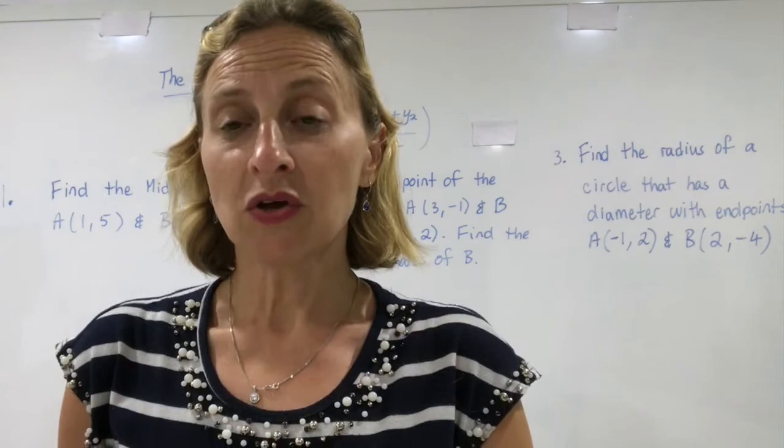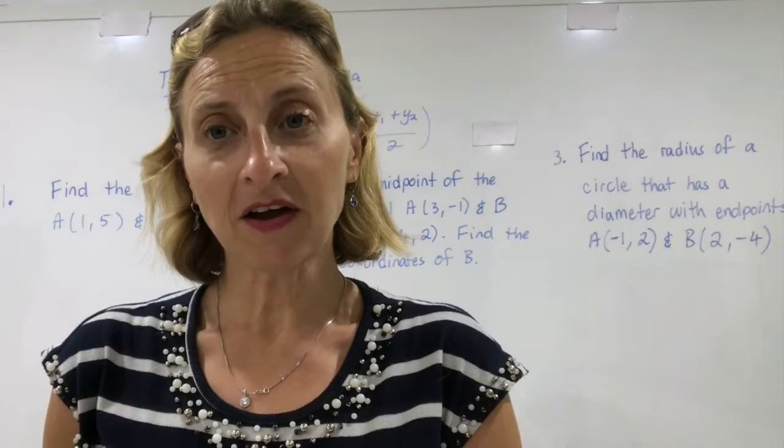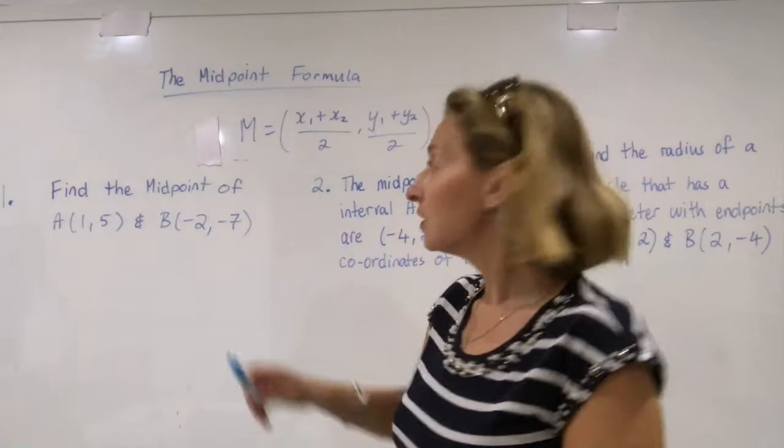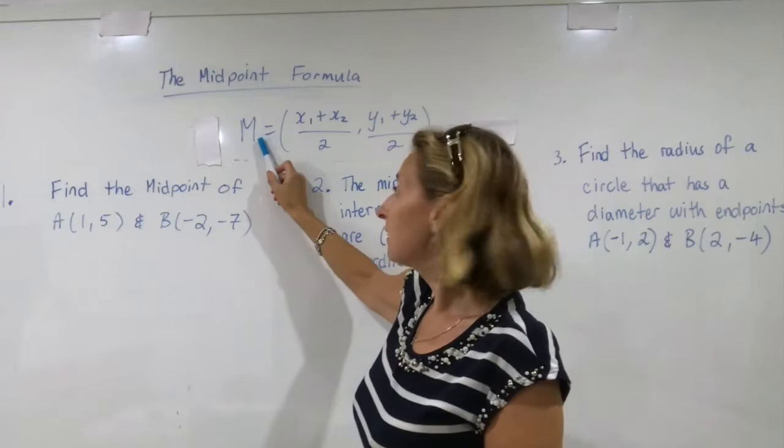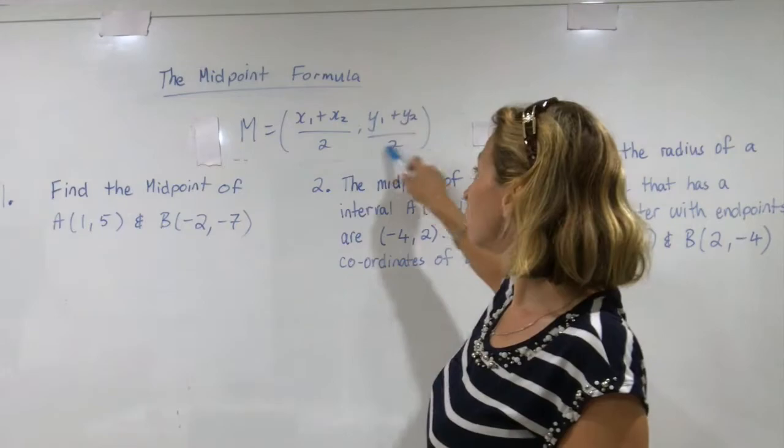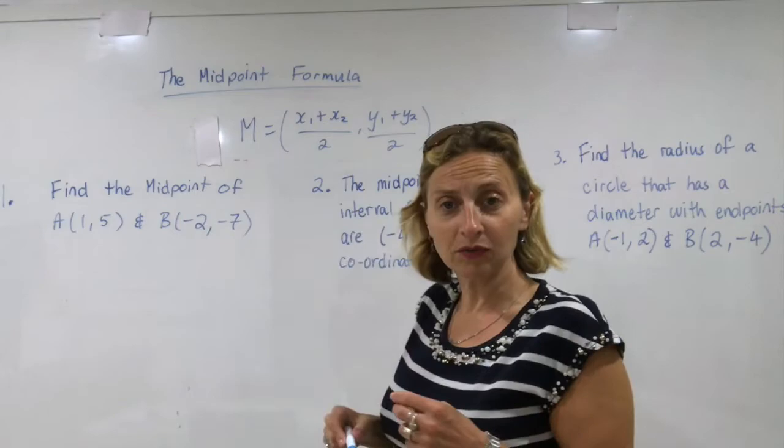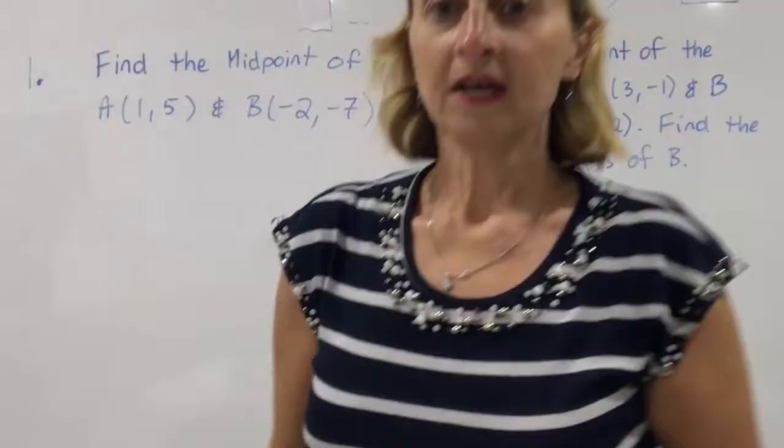Now remember midpoint is the middle so if you're trying to find the midpoint of anything you're trying to find the middle of it. And how do you find the middle of anything? You find the average and that's what the formula is. Average. So when you're trying to find midpoint and be careful midpoint is always capital M. The midpoint is the average of the x values and the average of the y values. And to find the average of two points you add them up divided by two. So the midpoint formula is just finding the average. That should be pretty simple.